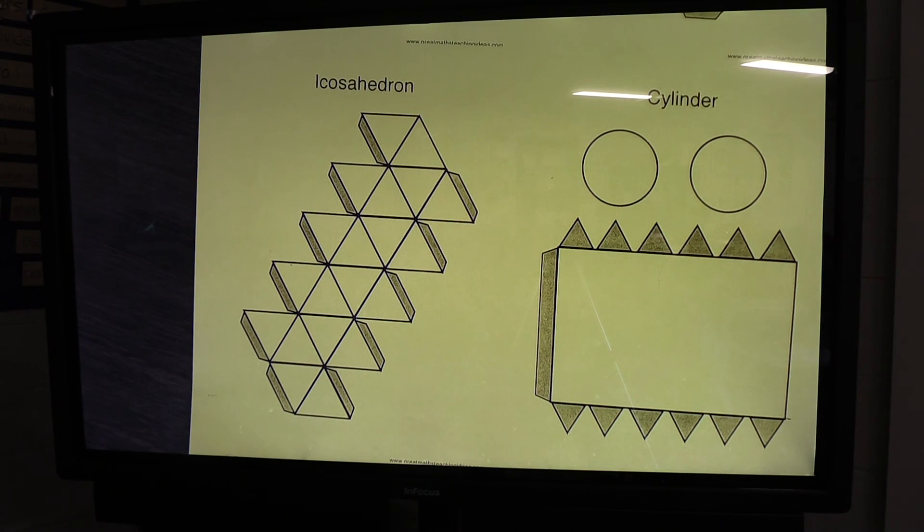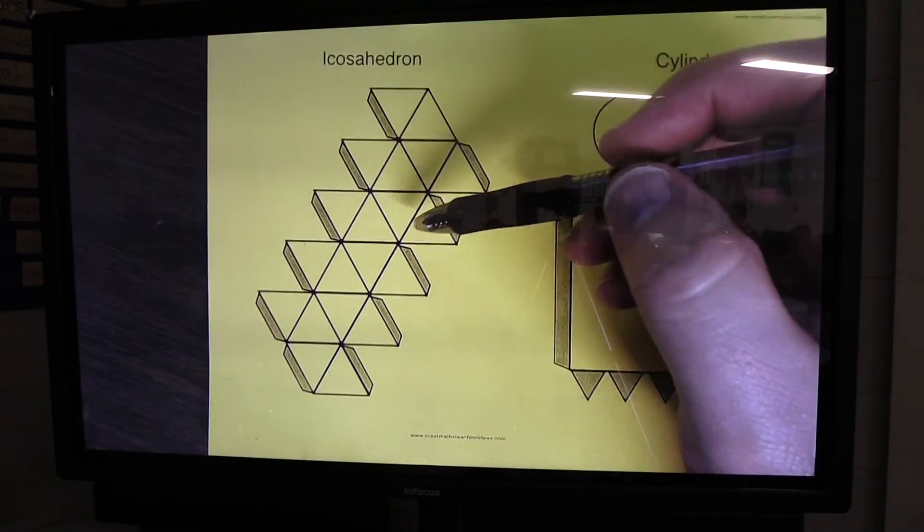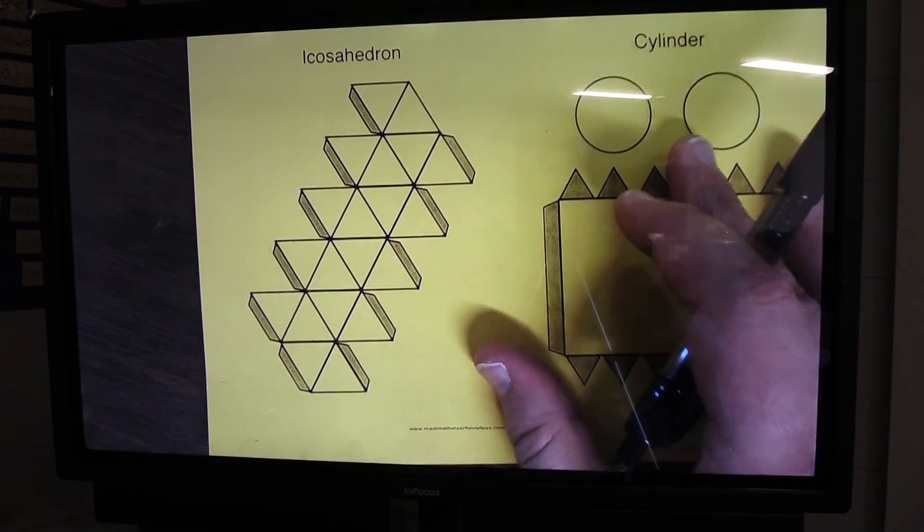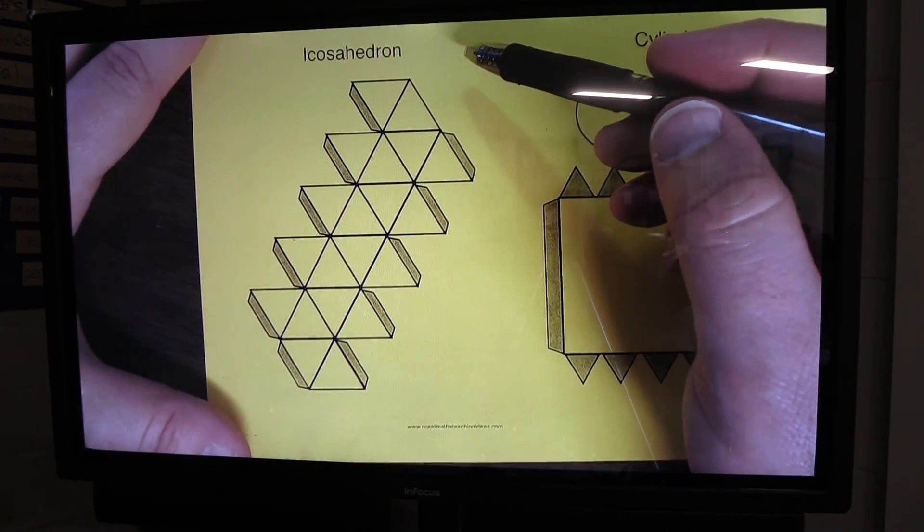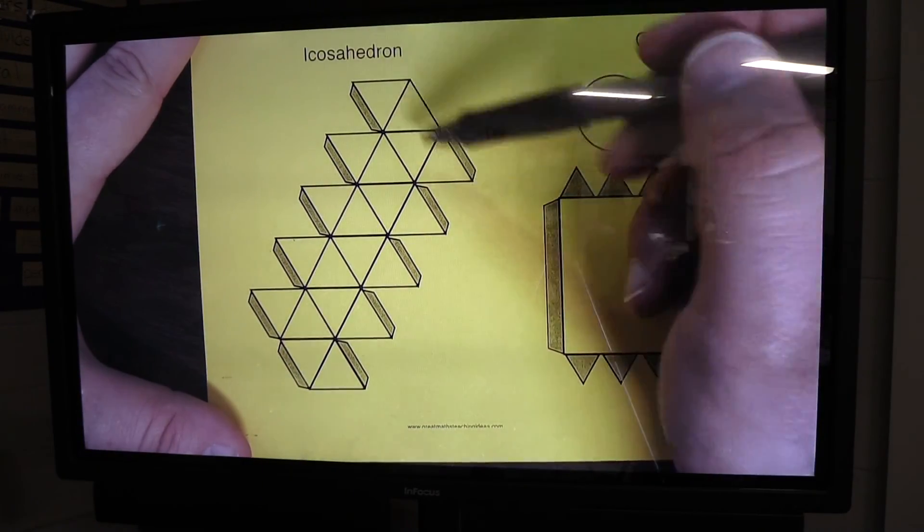My students are working on turning nets into geometric shapes. Now here we have an example of a net, and when I look at this particular net, it does have faces on it.